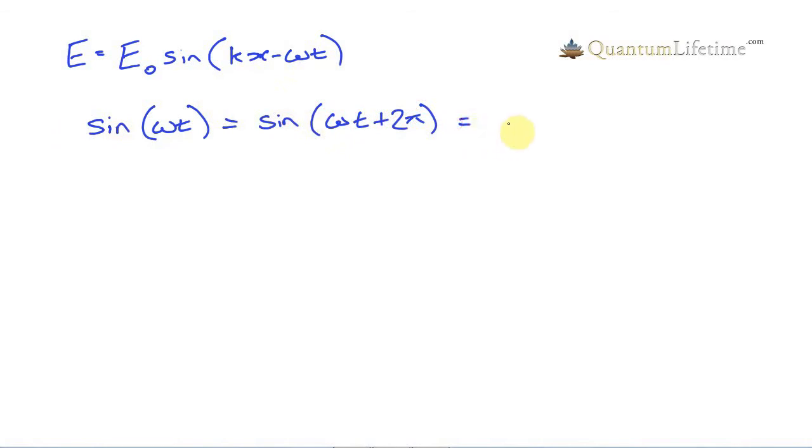And that's also going to be equal to sine of omega times the quantity t plus capital T. And what this capital T is, is the period of the wave. So it's how long in seconds the wave takes to repeat itself.